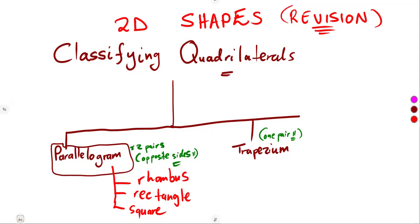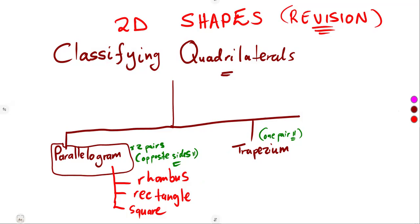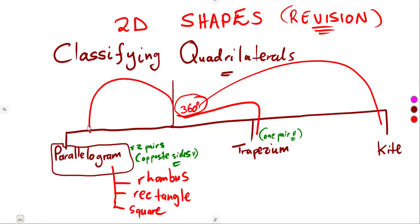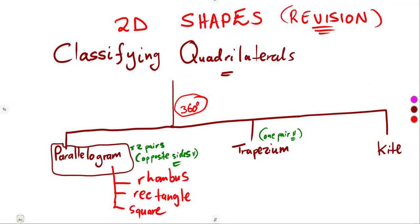Just like the trapezium, we also have a kite — a rhombus, a rectangle, and a square. A kite has nothing similar to a parallelogram or a trapezium. But the one thing common to all of these shapes is that the sum of their interior angles is 360 degrees, as long as it's a four-sided shape.